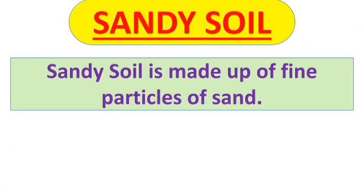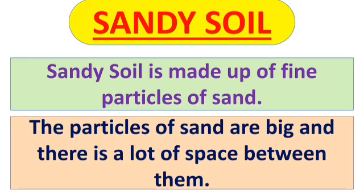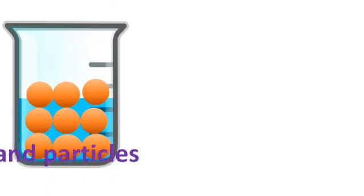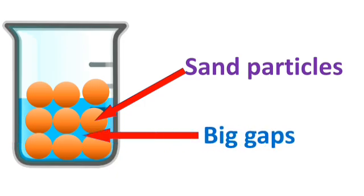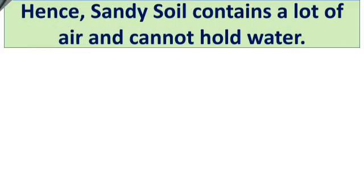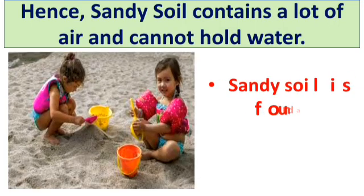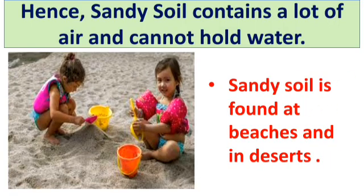First is sandy soil. Sandy soil is made up of fine particles of sand. The particles of sand are big and there is a lot of space between them. As you can see, there are sand particles which are big in size with big gaps between the particles. Hence, sandy soil contains a lot of air and cannot hold water.